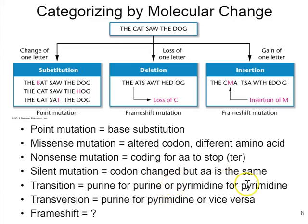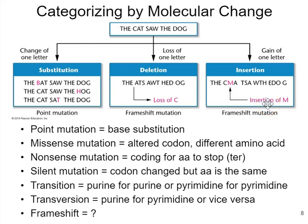Let's focus on categorizing mutations by molecular change. Using 'the cat saw the dog' as a proxy for a DNA sequence, we can have substitutions, deletions, or insertions. A substitution means swapping one nucleotide for another. A deletion means removing one or more nucleotides. An insertion means adding one or more nucleotides. A substitution is often called a point mutation, while insertions and deletions both cause frameshift mutations, knocking a coding sequence out of frame and changing the nature of the codons.